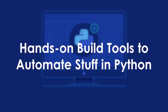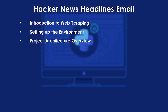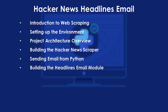Welcome to Section One of Hands-On Built Tools to Automate Stuff in Python. In this section, we'll build a Hacker News Headlines emailer. We'll begin with the basics of web scraping, then set up our system environment by installing the required Python packages. Then we'll move on to understand the project architecture, start scraping the Hacker News front page, and finally complete the email section so the tool can send us the Hacker News headlines.